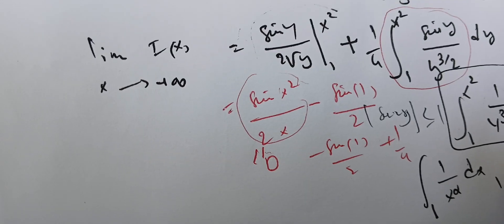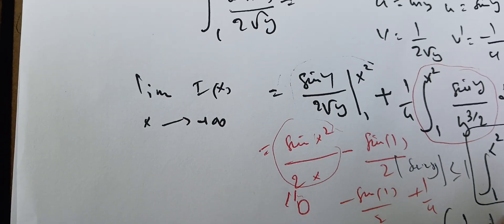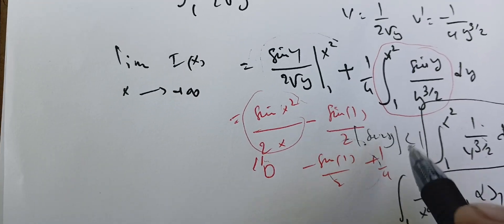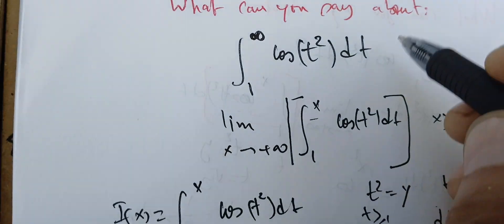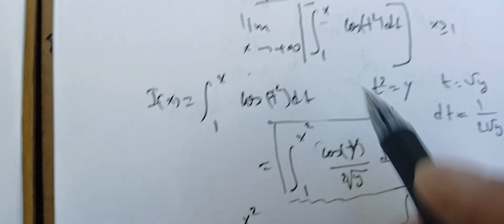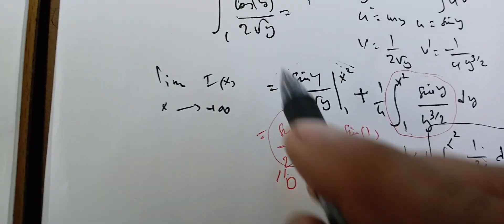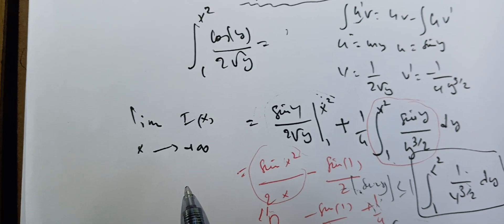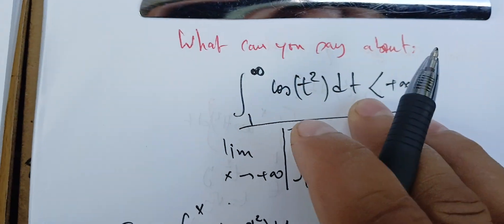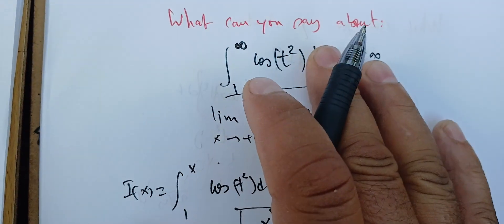Therefore my integral is finite. I won't be able to compute the exact value, but all I can say is that this integral is finite and convergent — it's bounded by a finite value. There are some techniques to compute this one exactly, but that's not our aim here. All we can say is that this integral is convergent. Its exact value will be known later. Thank you.